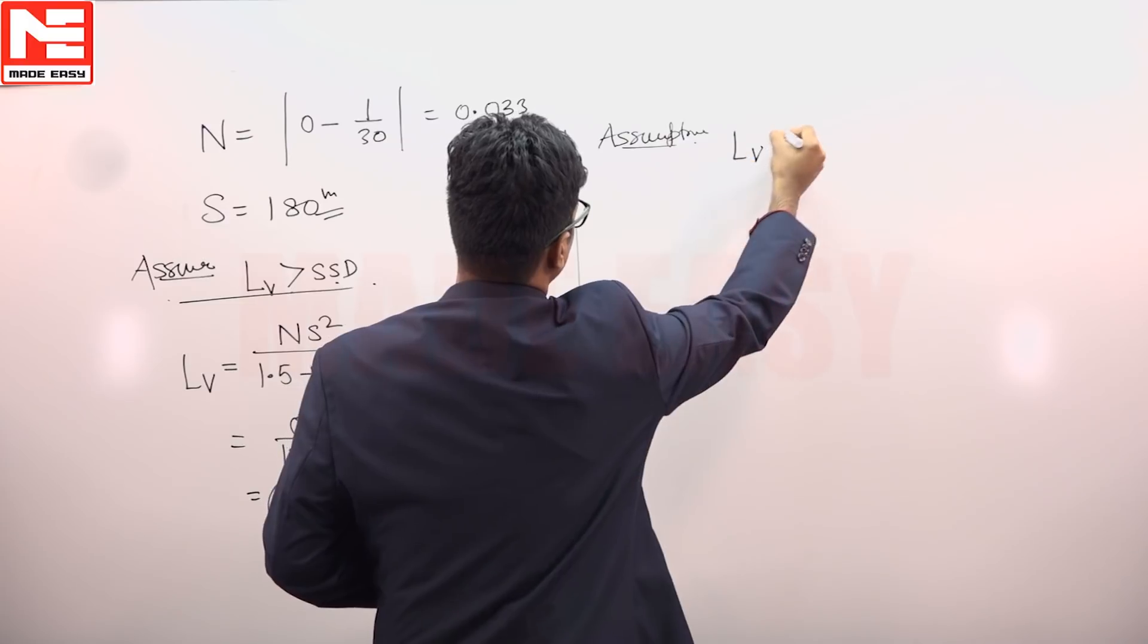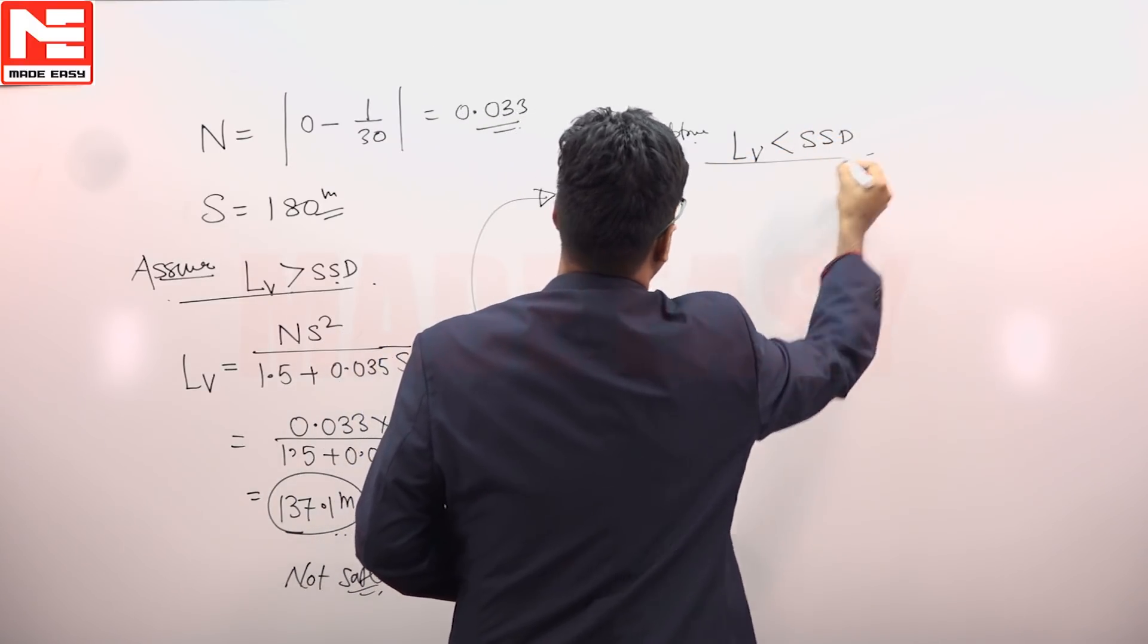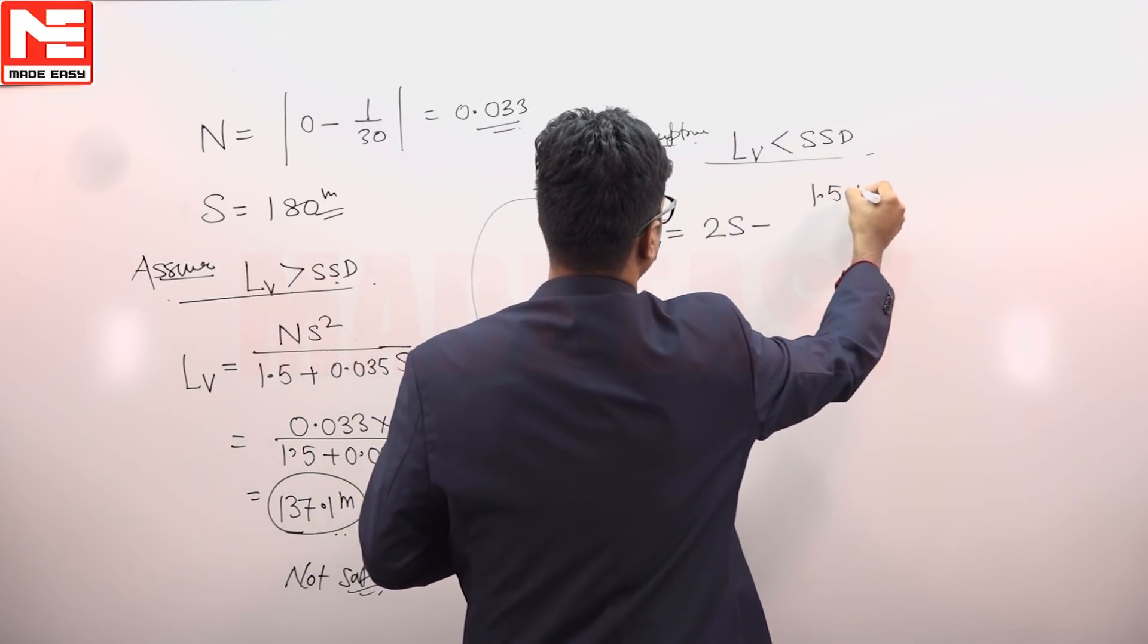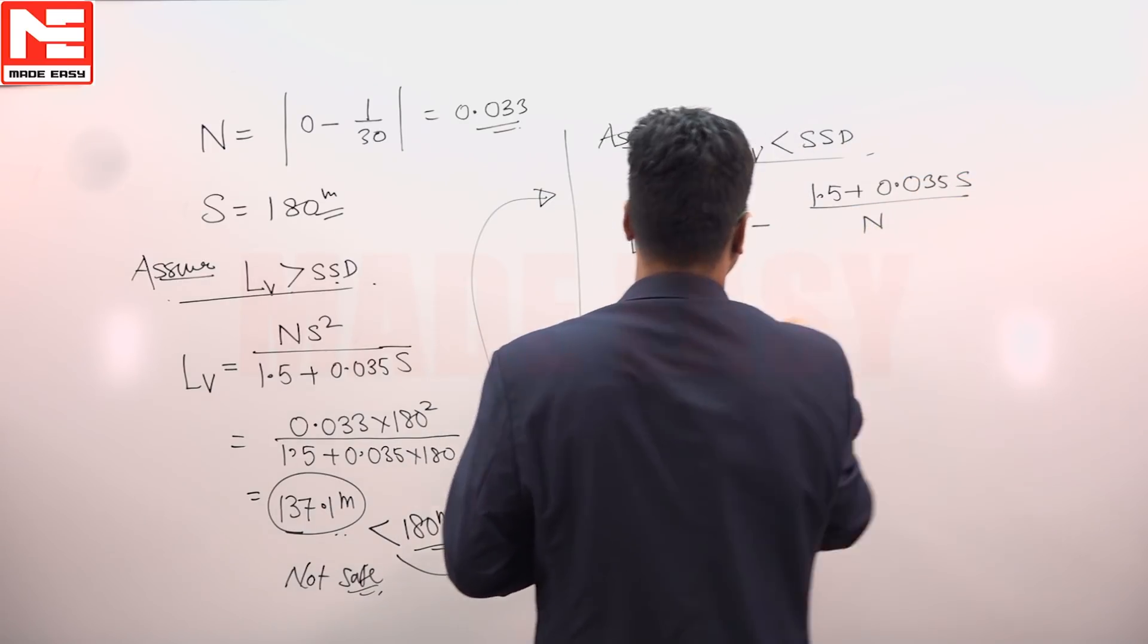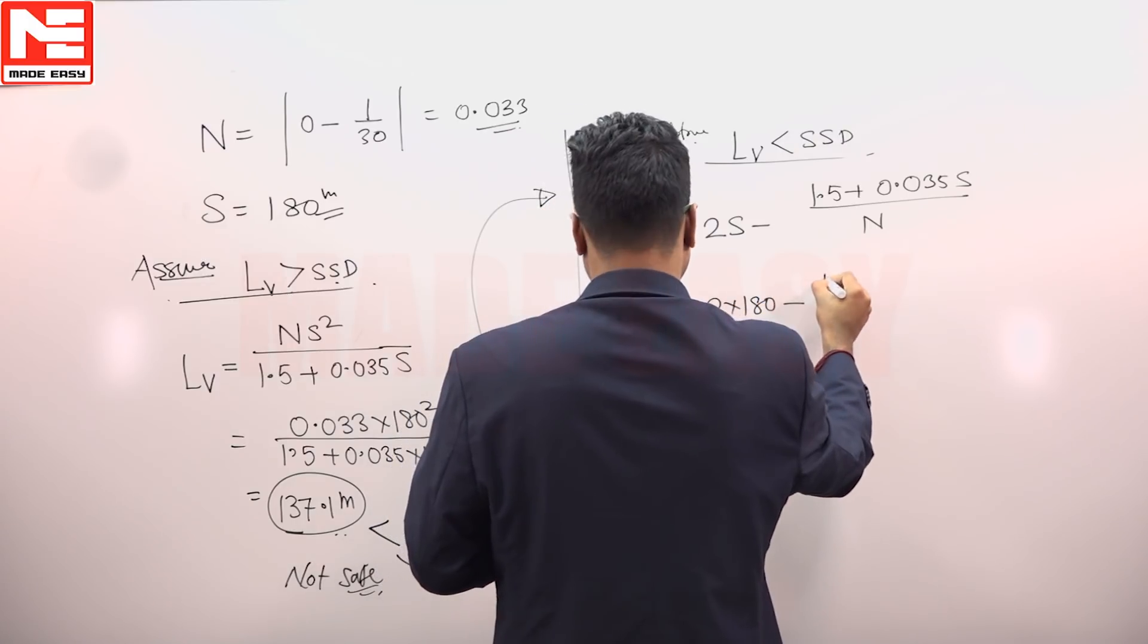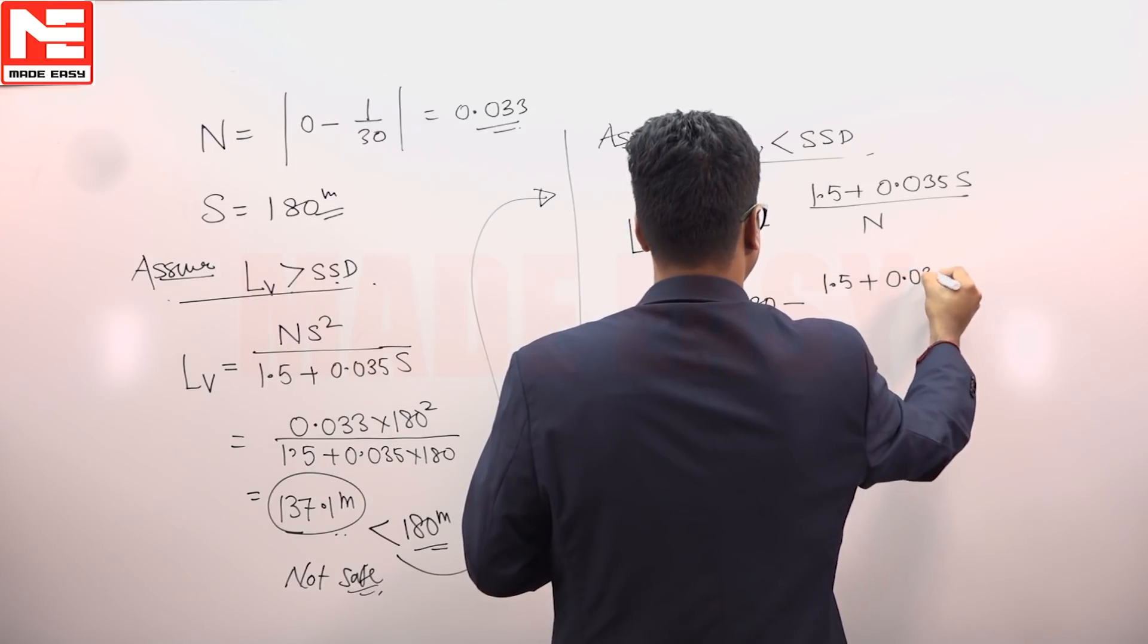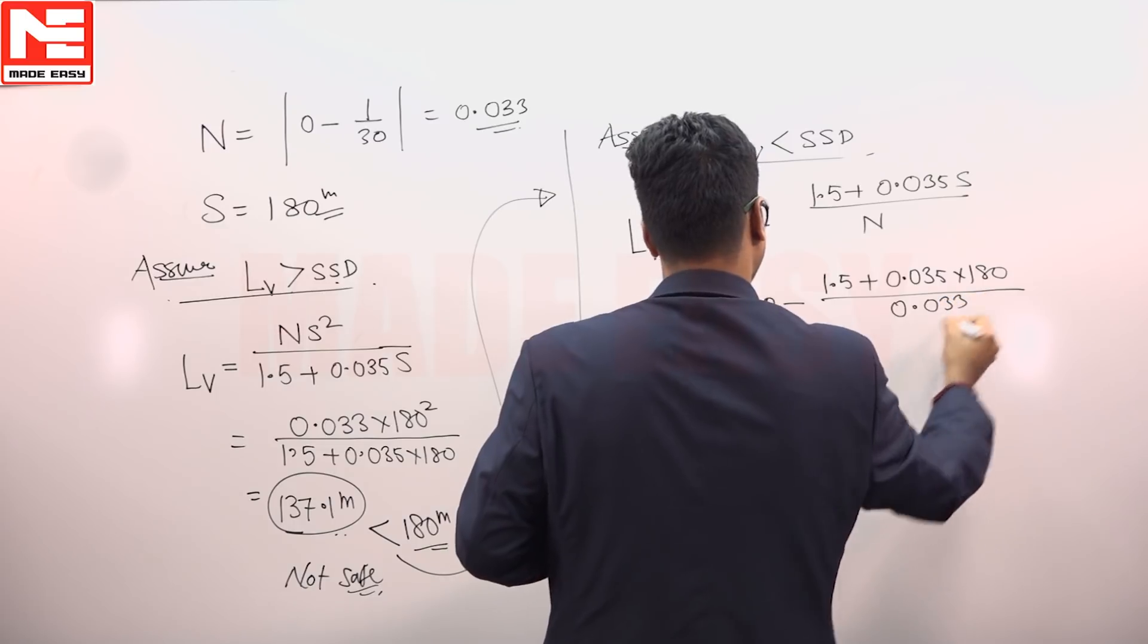Assumption that LV is less than SSD. As per this, length of valley curve is equal to 2S minus 1.5 plus 0.035 S, divided by N. So this is 2 into 180 minus 1.5 plus 0.035 into 180, divided by 0.033.